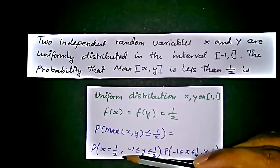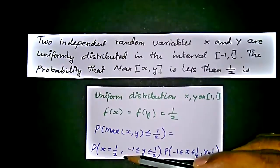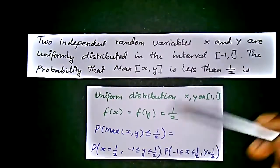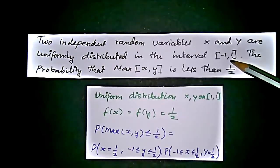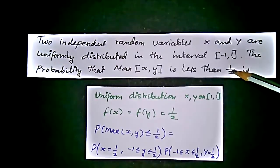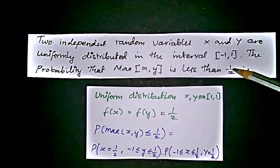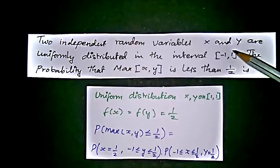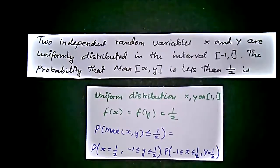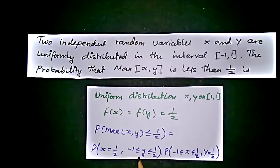So we will get x comma 1 by 2, minus 1. The interval given to y is minus 1 to 1 and this 1 is greater than 1 by 2, so we should change this to 1 by 2. We will get minus 1 less than or equal to y less than or equal to 1 by 2 times probability of minus 1.